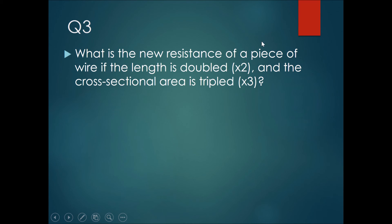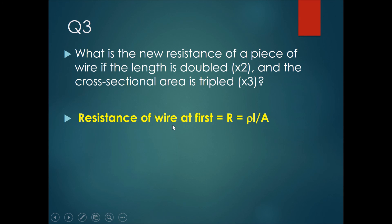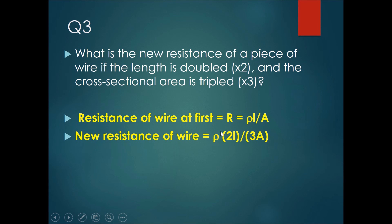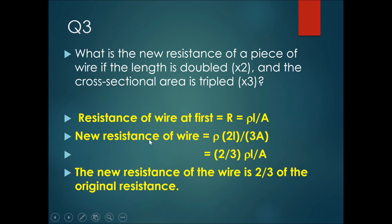Now let's try a third question, which is more commonly asked in examinations. They ask: what is the new resistance of a wire if some properties are changed — usually length and cross-sectional area? For this question, what is the new resistance if the length is doubled and the cross-sectional area is tripled? The original resistance is R = ρL/A. For the new wire, resistivity stays the same since the material didn't change, but length becomes 2L and area becomes 3A. Simplifying gives (2/3) × ρL/A, so the new resistance is two-thirds of the original resistance.